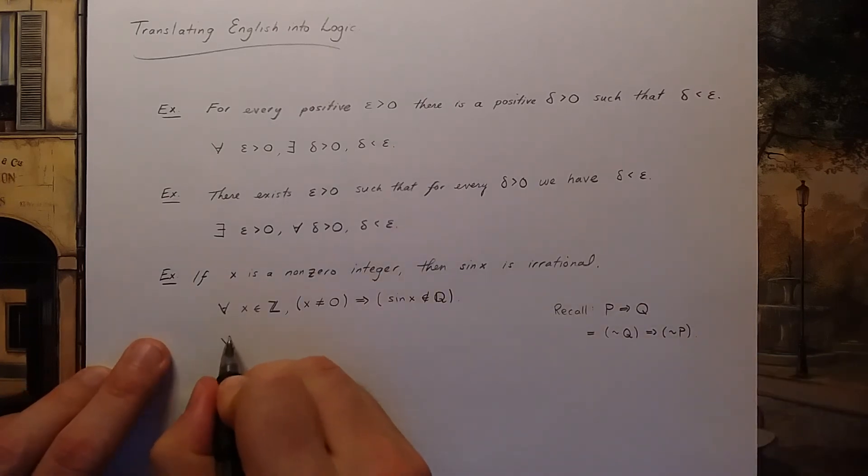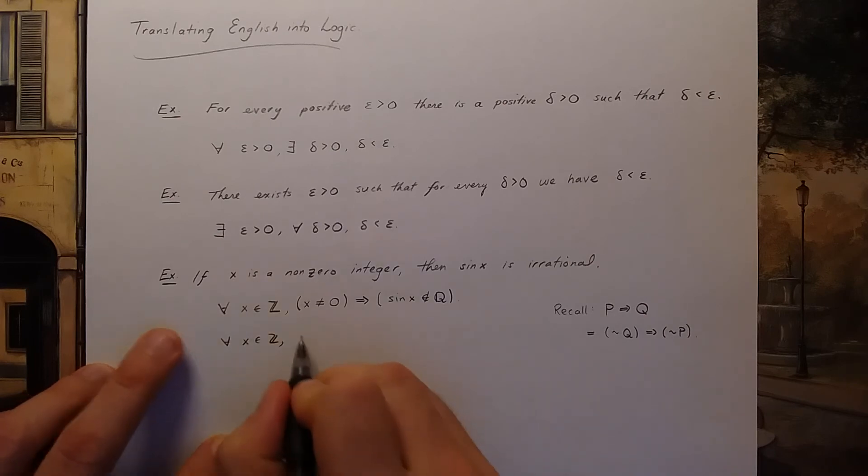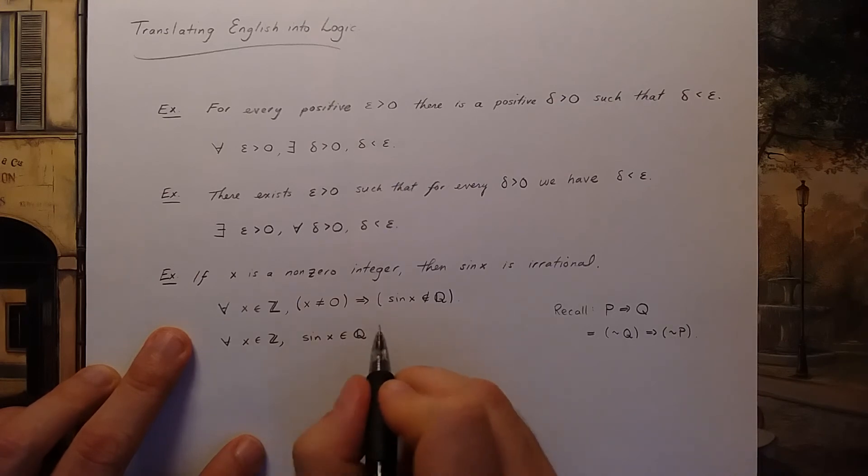So I could write this as for every x in Z, sine x is rational implies x is equal to zero.